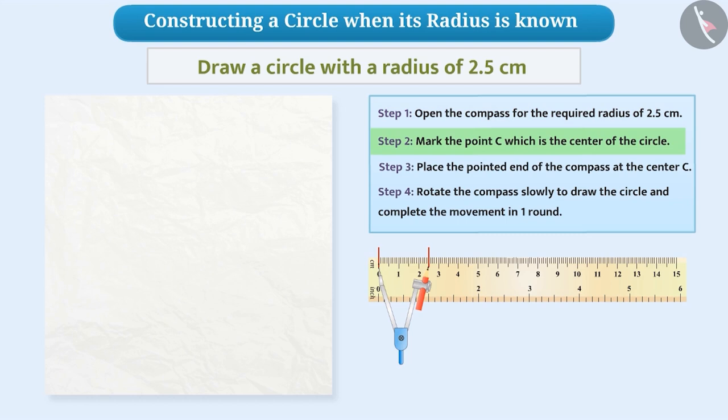Step 2. Using a sharp pencil, we will mark a point in the middle of the paper, which is the center of the circle, and name it as C.